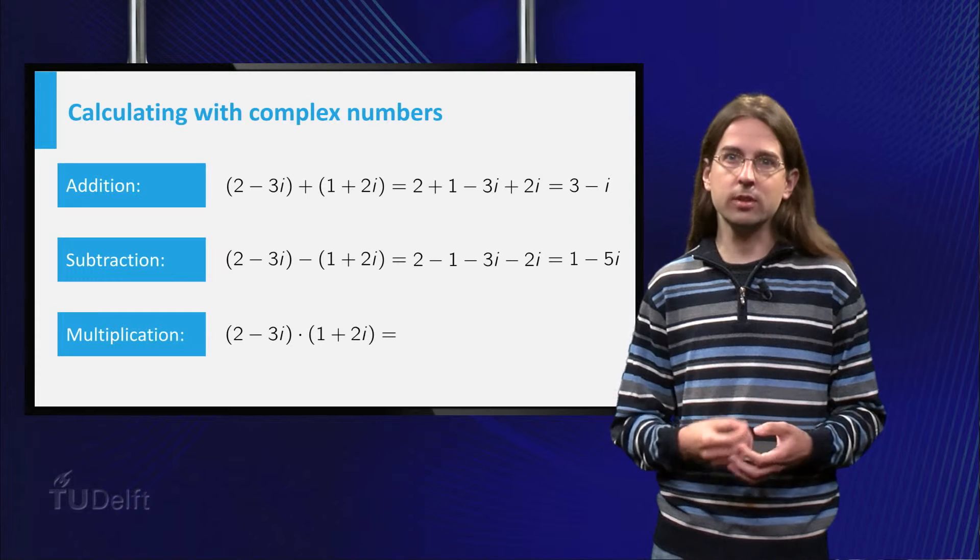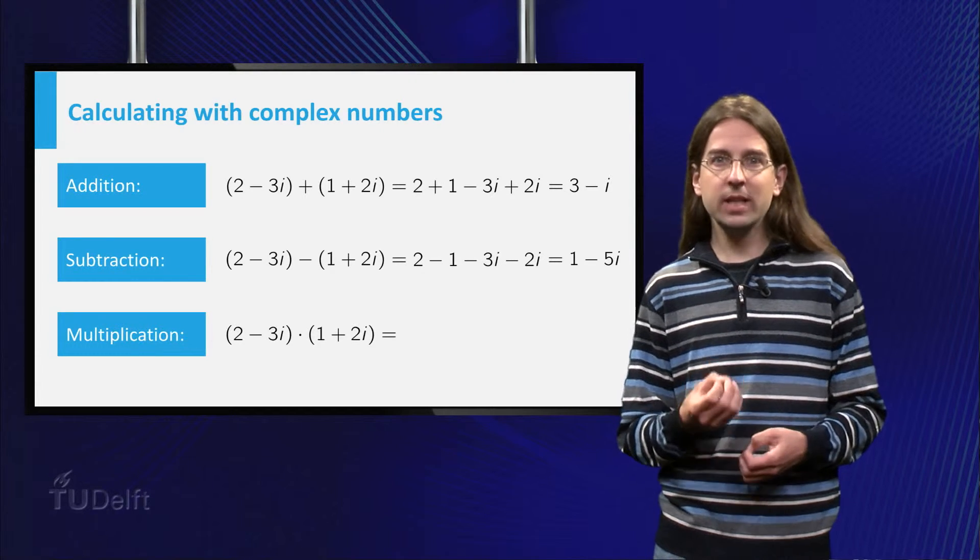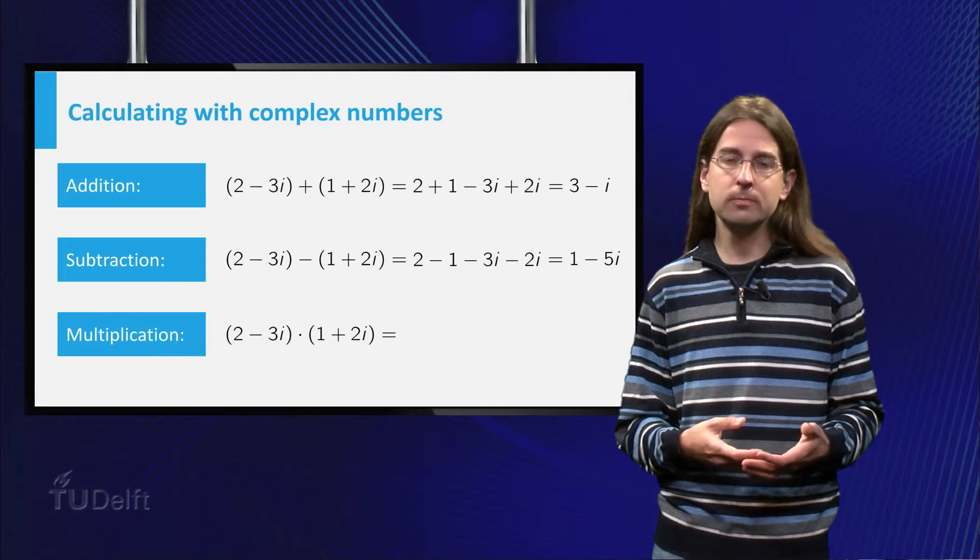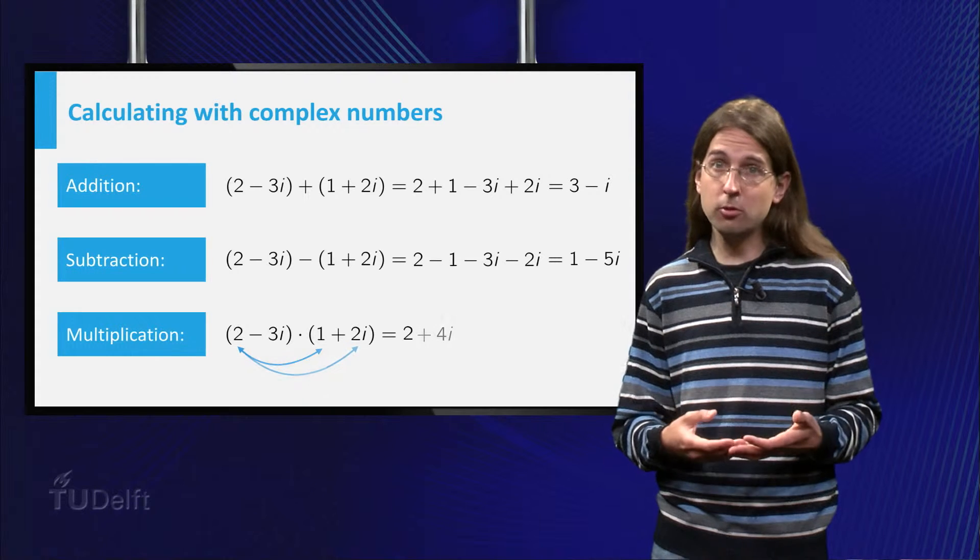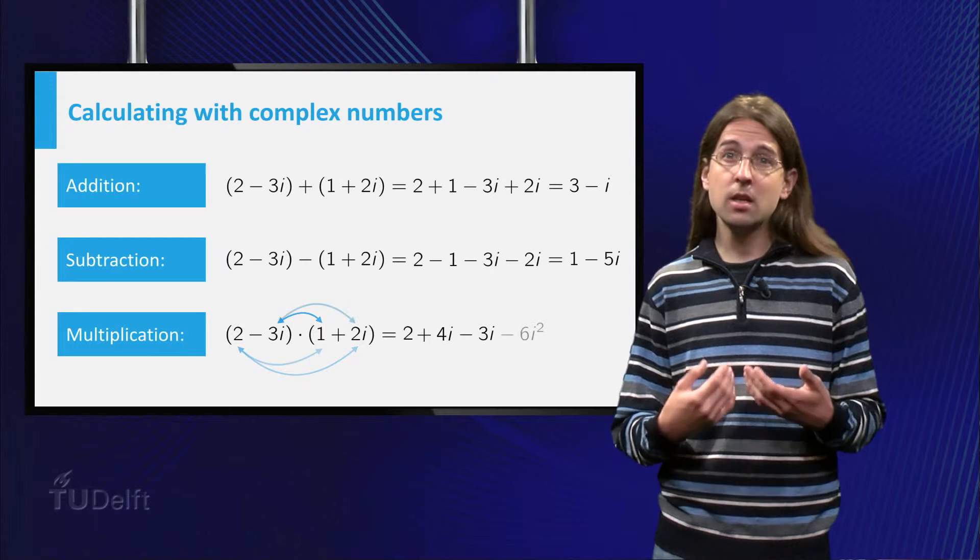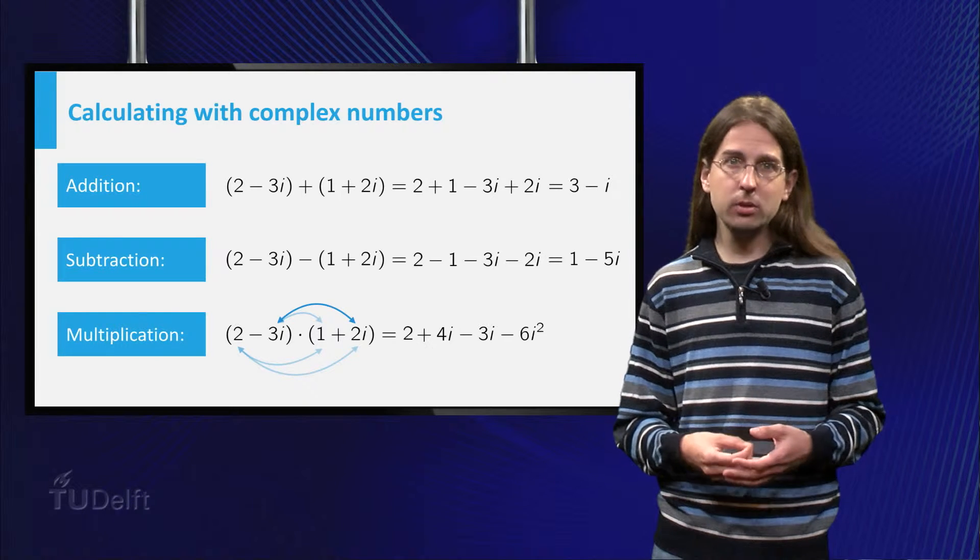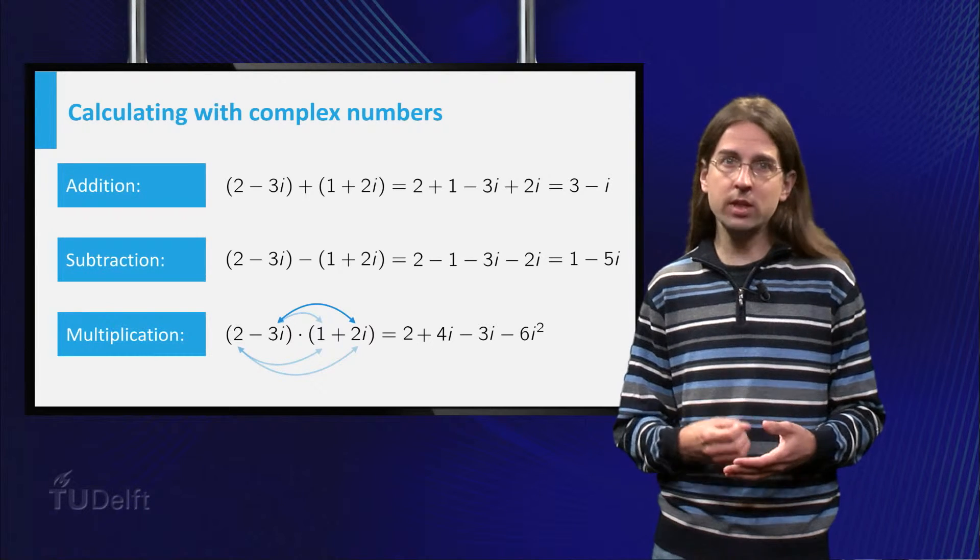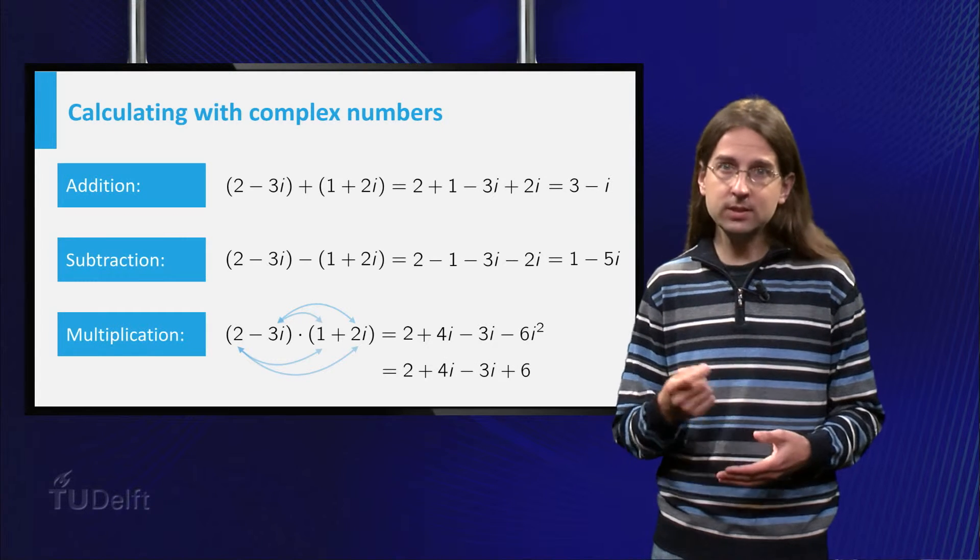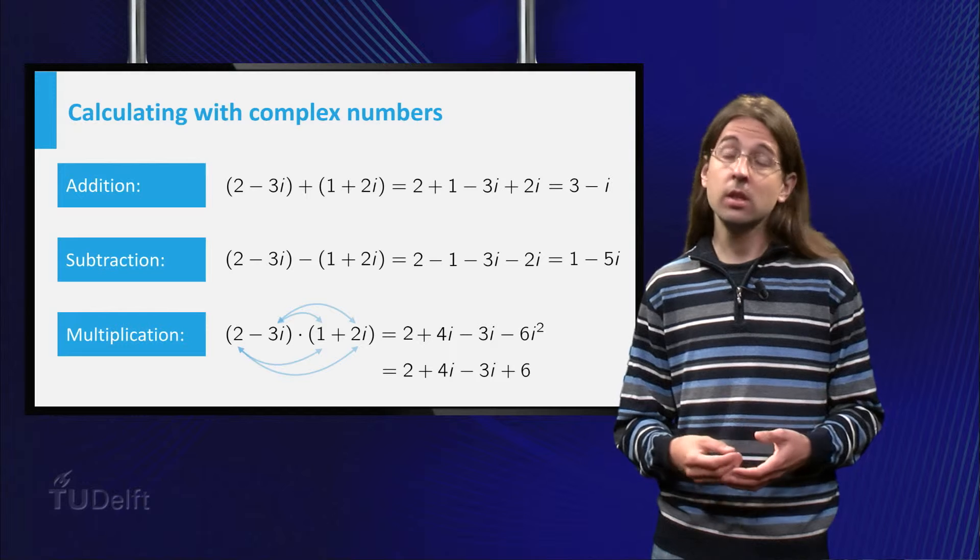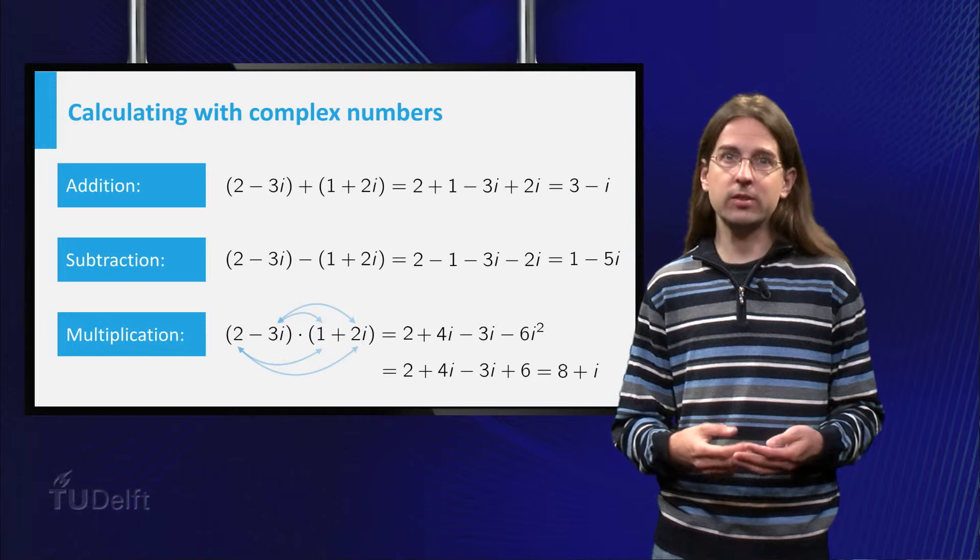Multiplication however is more difficult. The multiplication is defined by expanding the product as usual. So here we get 2 plus 4i minus 3i minus 6i squared. Now we use the convention that i squared equals minus 1, to find 2 plus 6 for the real part, and 4 minus 3 for the imaginary part, which yields 8 plus i.